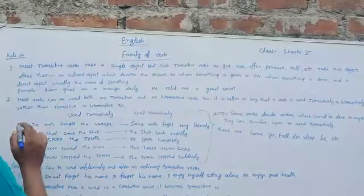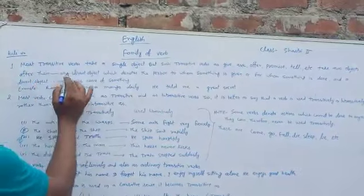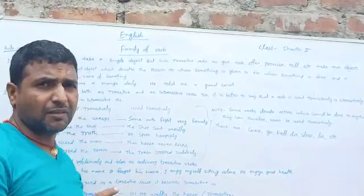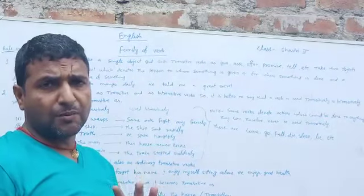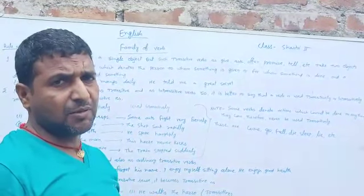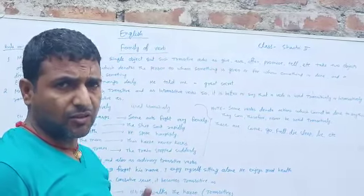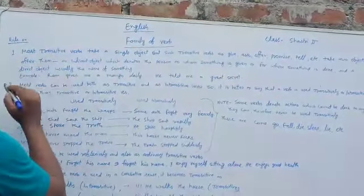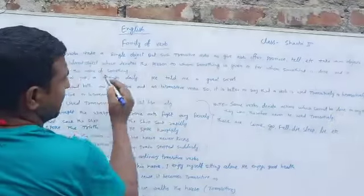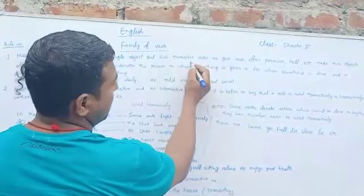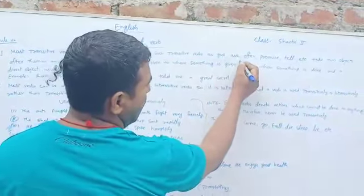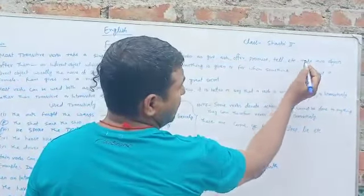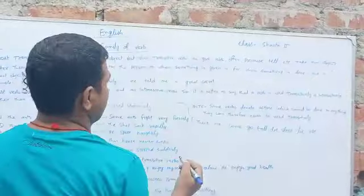Rule number one: most transitive verbs take a single object. But such transitive verbs as give, ask, offer, promise, tell, etc. take two objects.